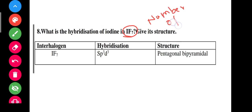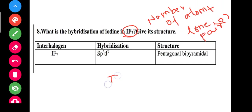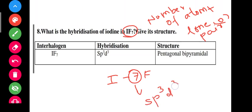Next: hybridization of IF7. Number of atoms around the central atom: I has 7 fluorine atoms, and there is zero lone pair on iodine. So 7 plus 0 equals 7. The hybridization is SP3D3 - counting: 3 plus 3 is 6, plus 1 (s orbital) is 7. So SP3D3 hybridization gives a pentagonal bipyramidal structure.